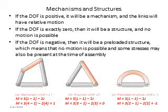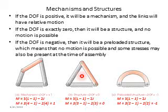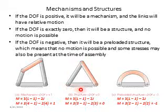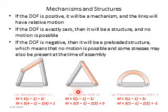If there is no motion at all in a combination of links and joints, then it is called a structure, not a mechanism. Example 2 is a classical example of a structure — whatever you do, none of the links or joints will move.